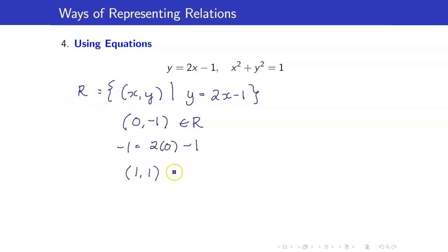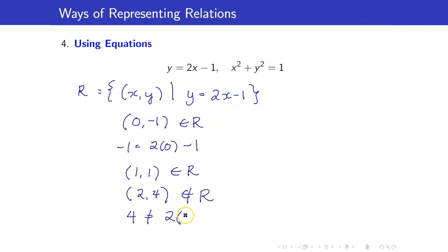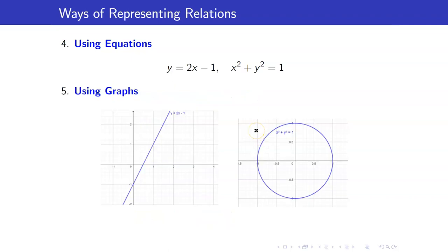Another element would be (1, 1). However, (2, 4) is not an element of your relation R because 4 is not equal to 2 times the x coordinate, which is 2, minus 1. Another way of representing relations is through graphs. We have seen that these equations can always be written as ordered pairs, so we just plot those ordered pairs in the Cartesian plane and we get the graph. For example, y equals 2x minus 1 would have a line as its graph. x squared plus y squared equals 1 would be a circle centered at the origin with radius equal to 1.